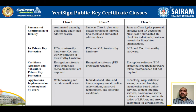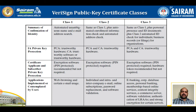The table clearly defines class one, class two, and class three with a summary of confirmation of identity. For the certificate authority private key, class one uses trustworthy software or hardware, class two uses hardware, and class three also uses hardware. For subscriber private key protection: class one uses encryption software with PIN protection recommended but not required; class two requires encryption software with PIN; class three requires encryption software and recommends a hardware token but does not require it.